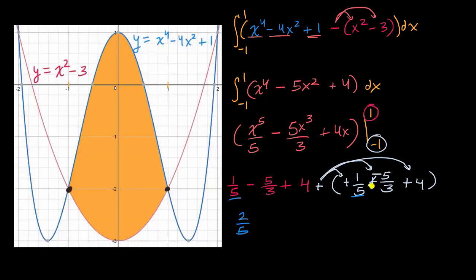And then minus five-thirds minus five-thirds. So minus ten over three. And then four plus four. So plus eight. And we just need to simplify this. This is going to be eight. And then I'm going to write these two with a denominator of fifteen. Because that's the common denominator of three and five. Two-fifths is six-fifteenths. Five times three is fifteen. Two times three is six.